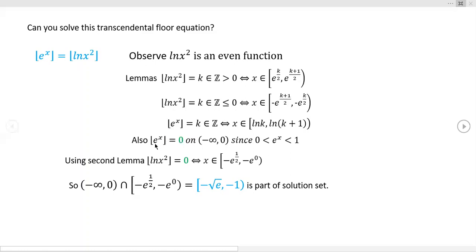And again, these are known graphs, e to the x, 10 to the x, they have a known shape, you know, y intercept of zero, one. And this part right here is just the definition of what it means to have a floor of zero.